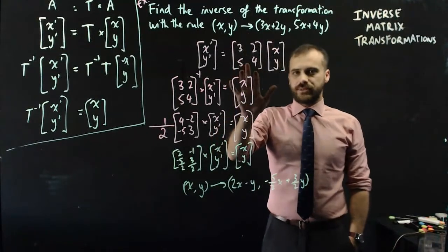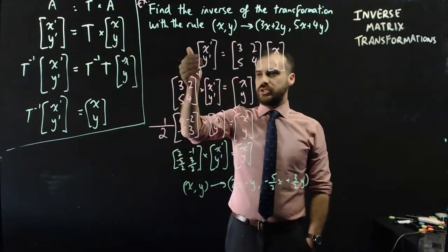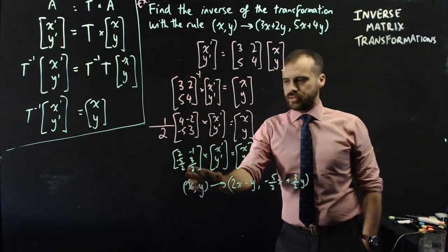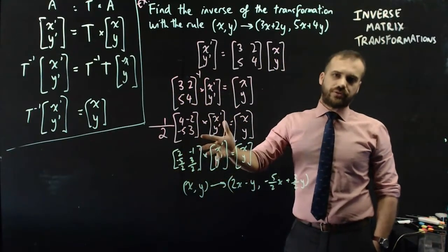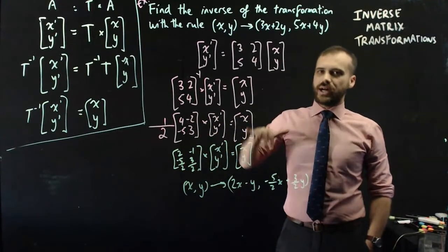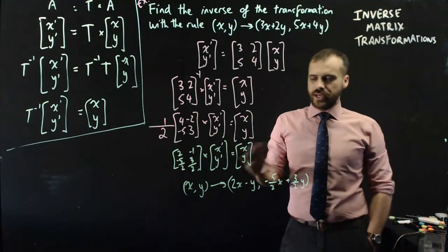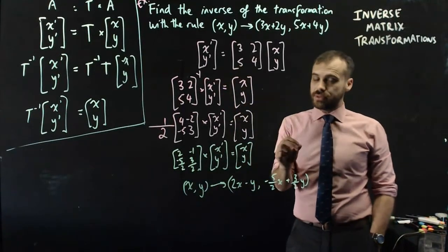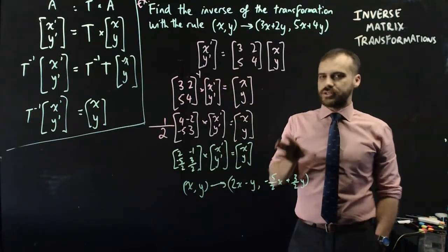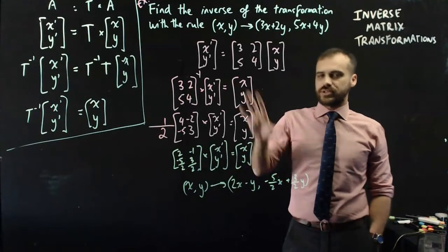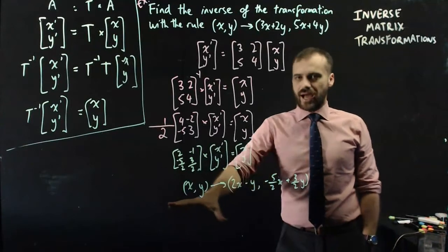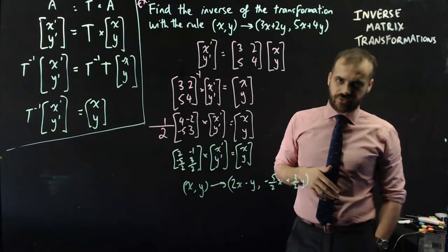You're subbing in your transformation matrix. You're subbing in your image, and then you just go through these steps until you get to here, and then you just multiply through. So this is probably the harder version of that question. It's more conceptual, whereas the other version where you're actually given an image is a little more concrete. So just keep that in mind. This is kind of the more abstract version of an inverse matrix transformation.